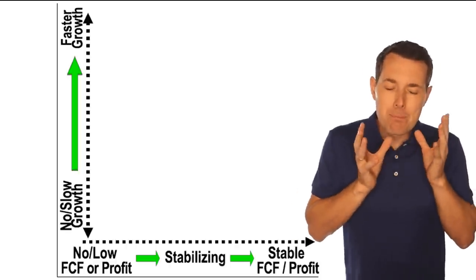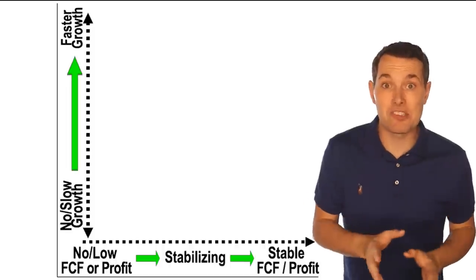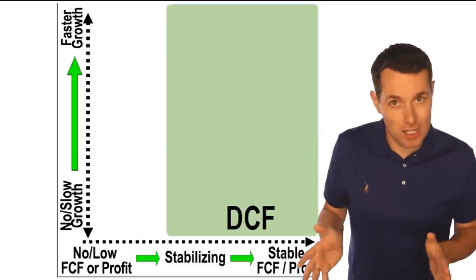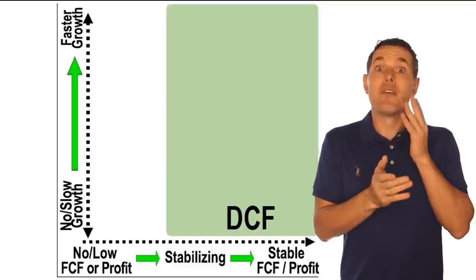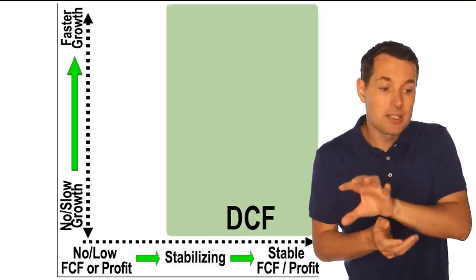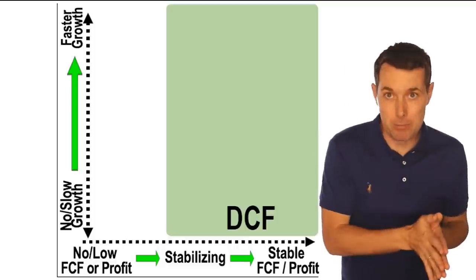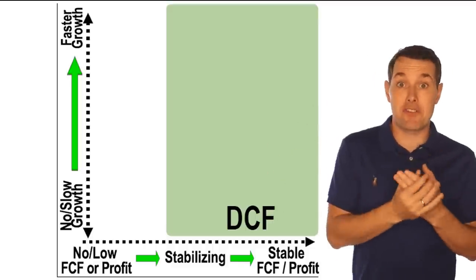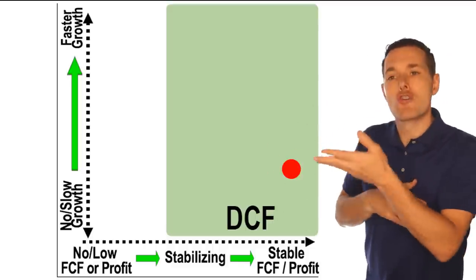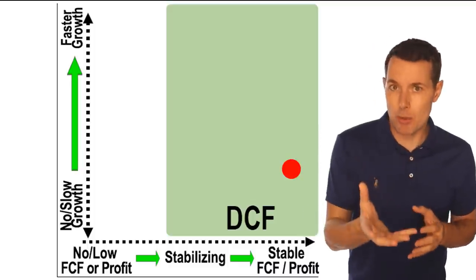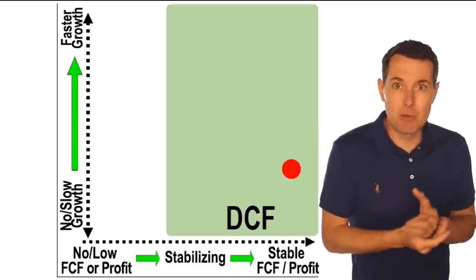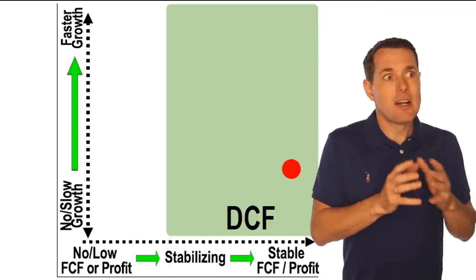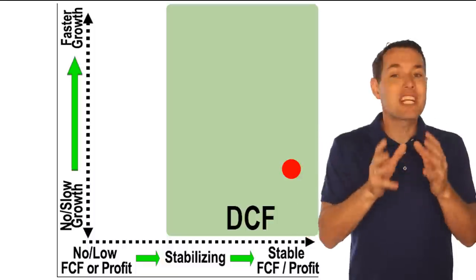The ideal valuation method to use is something like discounted cashflow. But discounted cashflow does not cover all stocks — it only covers stocks that have free cashflow and ultimately profit stabilizing, and ideally stable. If a company lands right here on the chart where they don't have a ton of growth but have very stable or predictable free cashflow and profit, you only have to project out a couple of years from a free cashflow perspective.